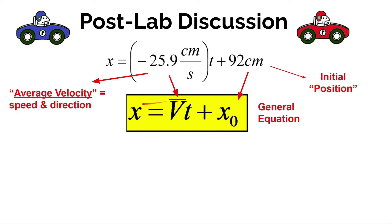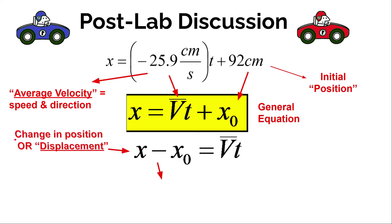We can rearrange this general equation using algebra without changing the relationship between the variables — final position, average velocity, time, and initial position. If we subtract the initial position x-sub-zero from each side, we get: final position minus initial position equals average velocity multiplied by time. Any time you take a final value minus an initial value, that gives you the change in that value. Final position minus initial position gives us the change in position — how much the position changed. In physics we have a term for that: we call it displacement.